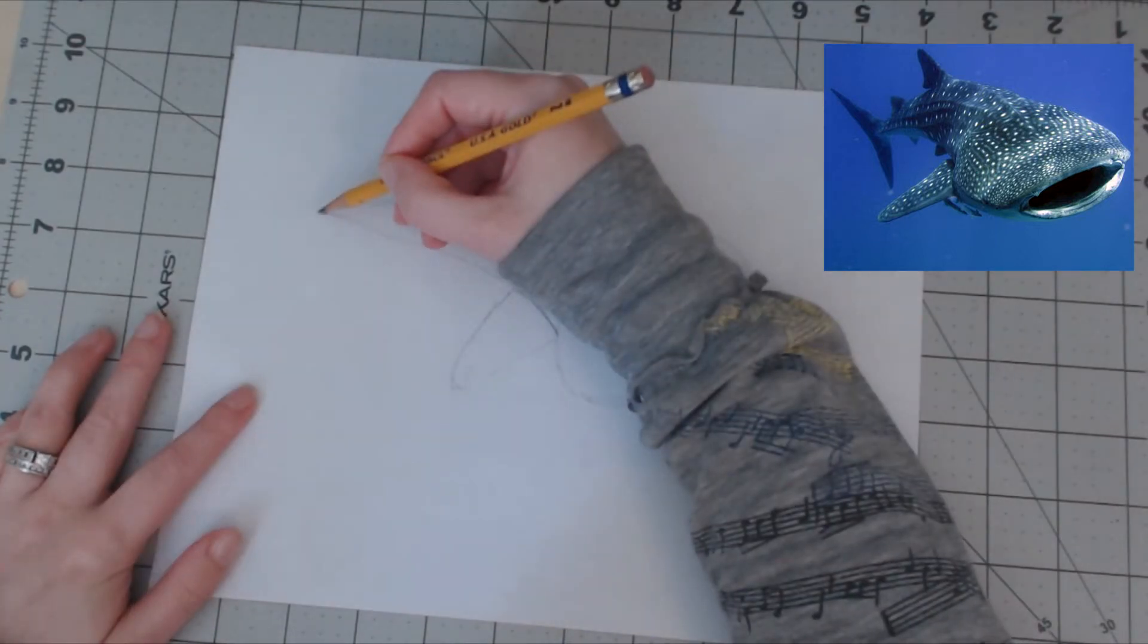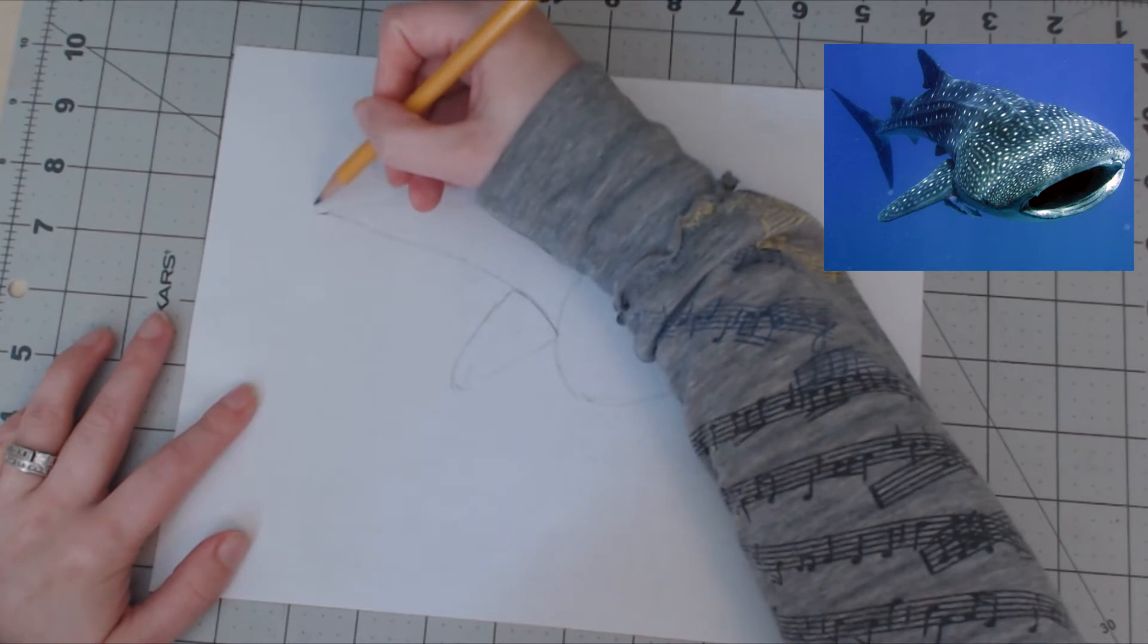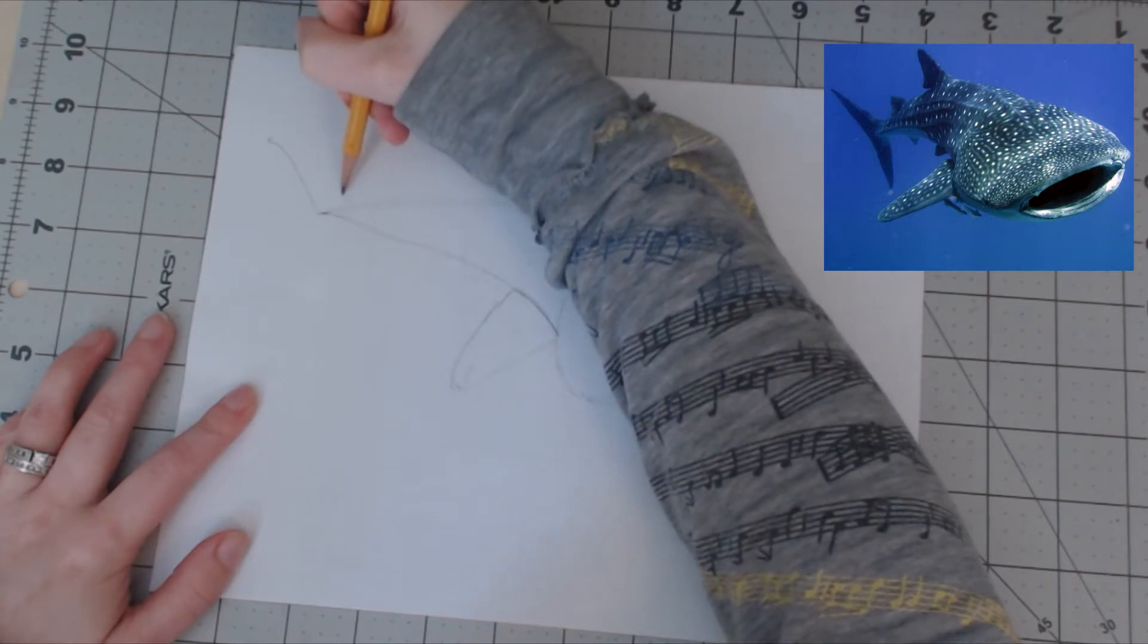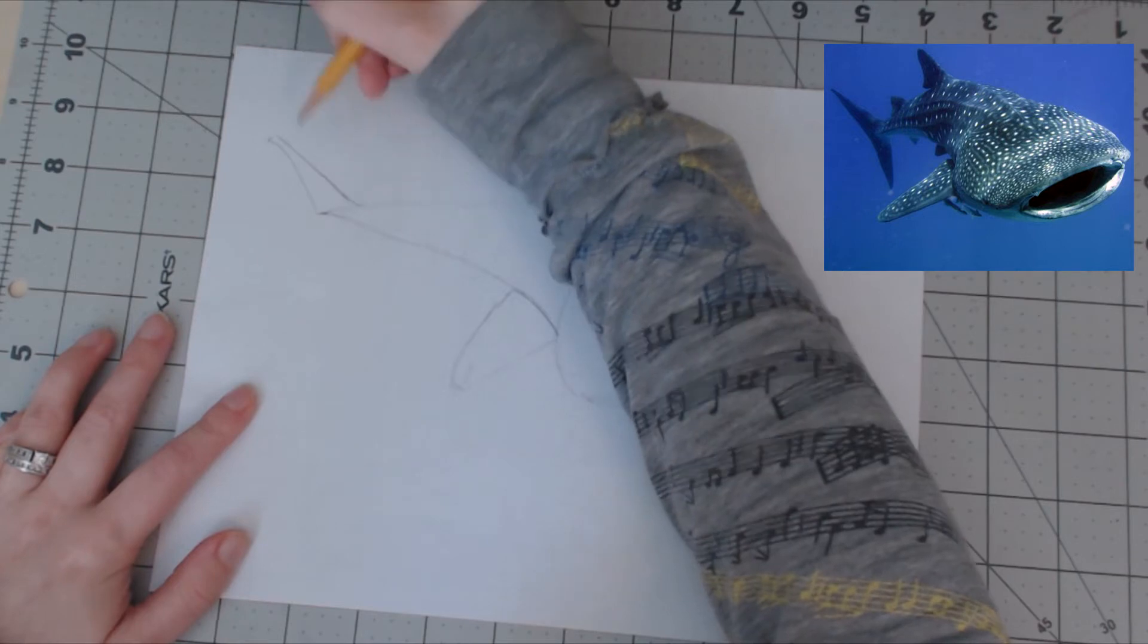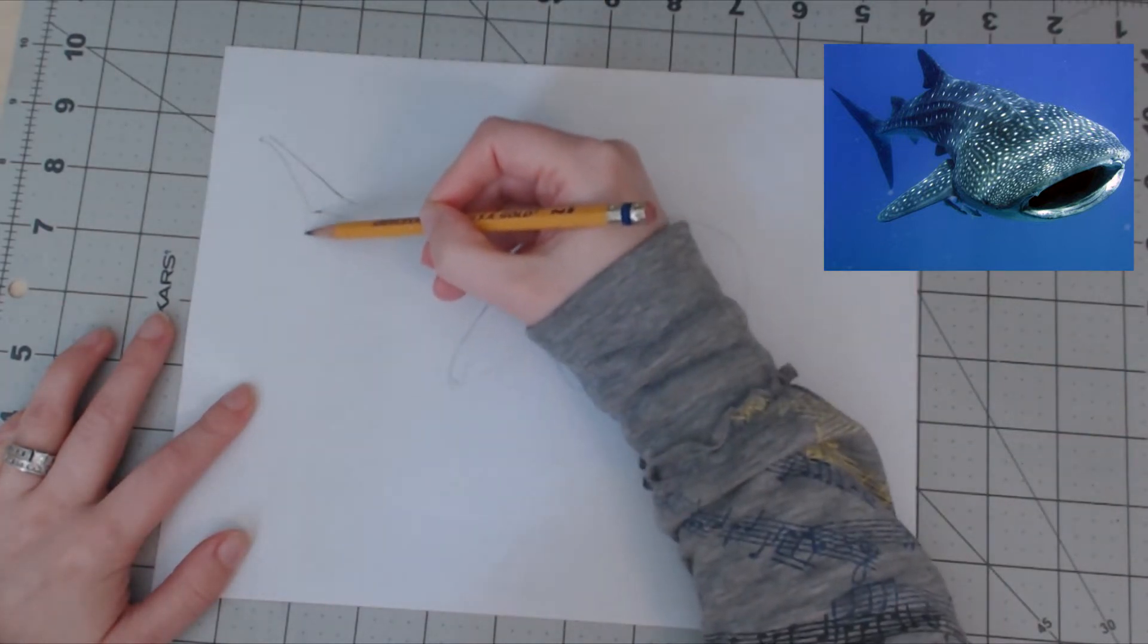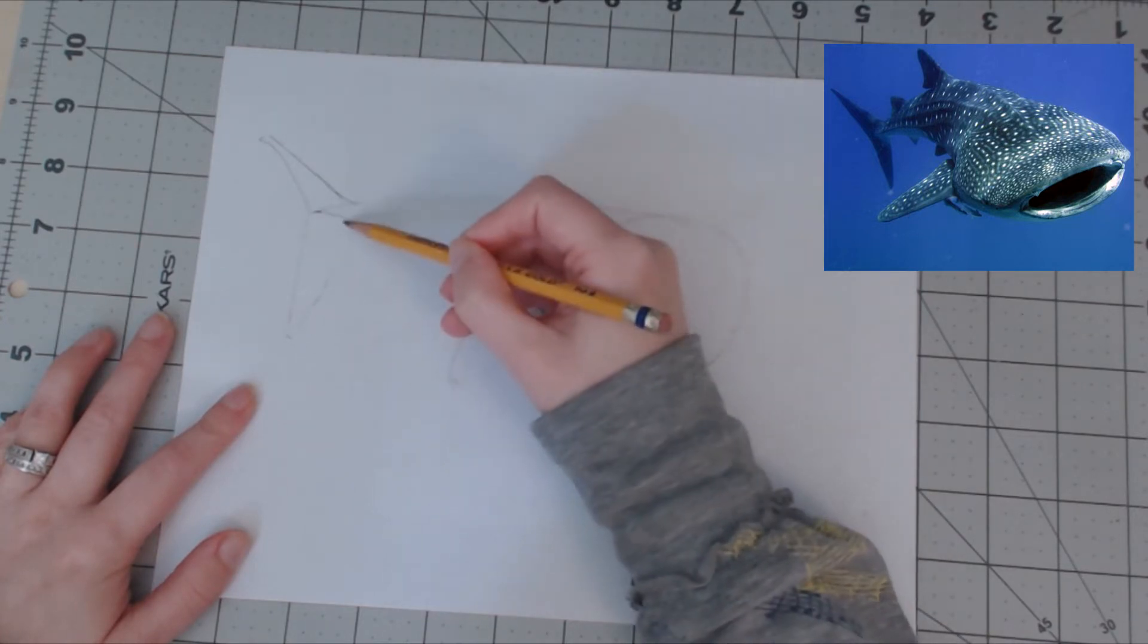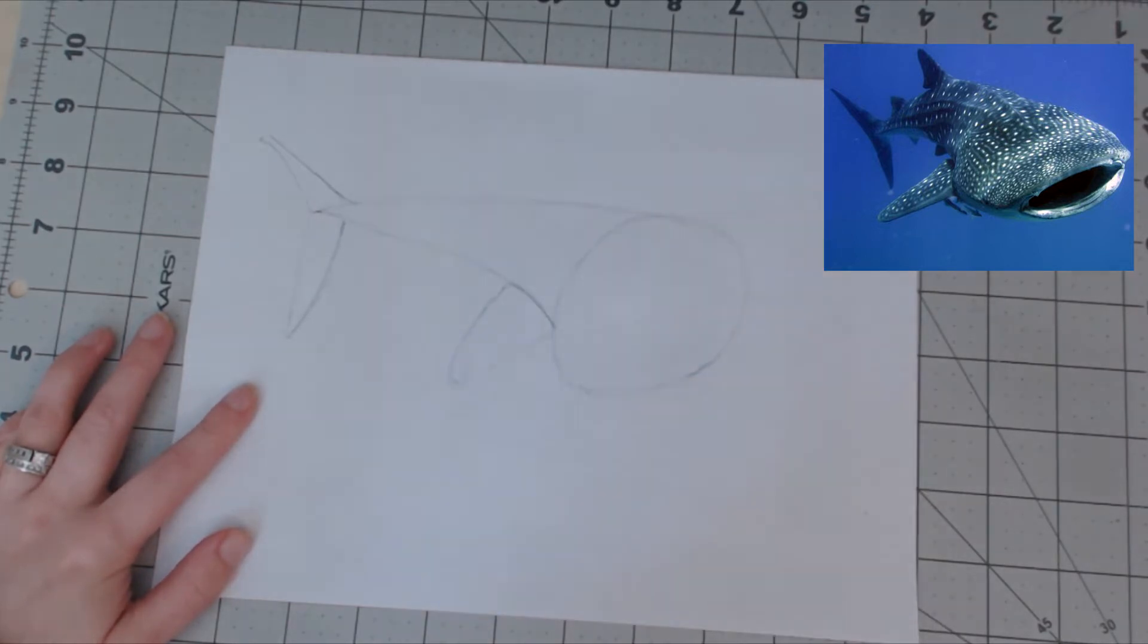So we could go ahead and do his tail right now as well. We're gonna do one triangle up—it's kind of rounded at the tip—and then we bring it back here, and the same with the bottom one. Kind of reminds me of an airplane tail a little bit.